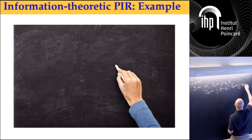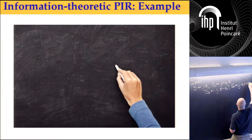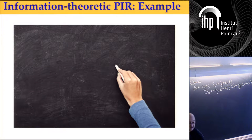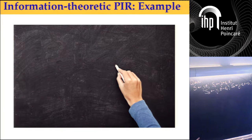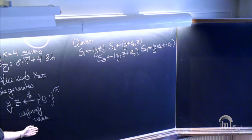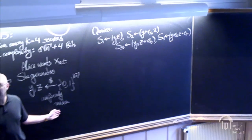Server 3 will get the bit flipped in the other position: y and z plus e sub t. And the last one will have both bits flipped: y plus e sub s, z plus e sub t. Each one of those queries is uniformly random — if you take a uniform vector and flip a bit, it's still uniformly random.